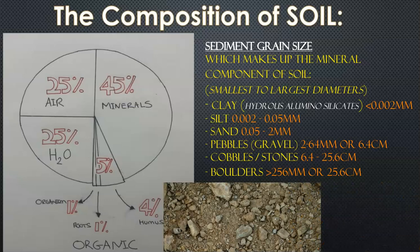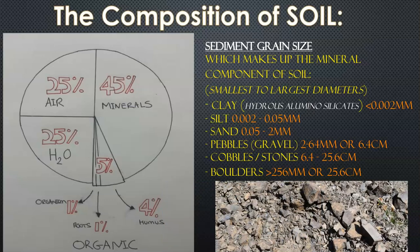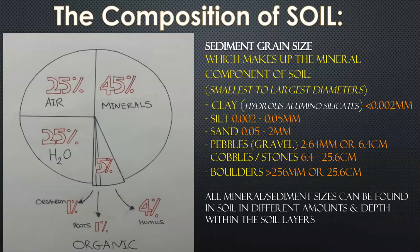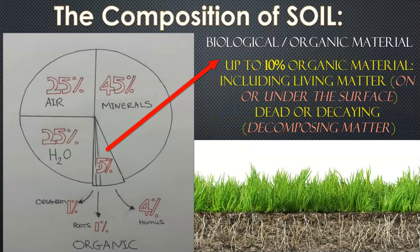Then we get the cobbles and stones, larger pieces of rock or pieces of minerals combined. They're between 6.4 centimeters to 25 centimeters. Then we get the boulders, the large rocks that are in the soil and in the ground, which is anything over 25.6 centimeters or 256 millimeters, classified as boulders. All of these can mix in with the soil, but that's the largest component. Then we get the biological, up to 10% of the soil.